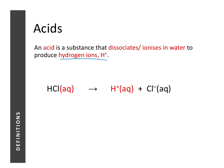All acids contain hydrogen ions paired with another anion, and the other anion can be inferred from the name. For example, hydrochloric acid contains hydrogen ions and chloride ions, so the formula for hydrochloric acid is HCl.